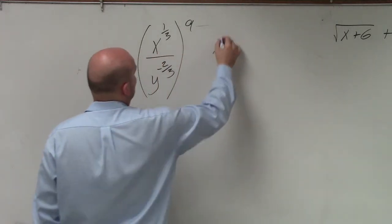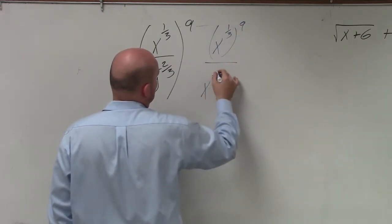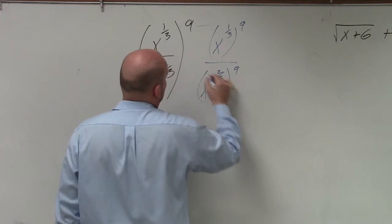So we can rewrite this as x to the 1/3 raised to the 9th over x to the negative 2/3 raised to the 9th.